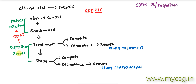Within disposition events there are two possibilities: one is study treatment disposition and the second is study participation disposition. We use a variable called DSSCAT for sub-categorization of the disposition value. DSSCAT is used to store, for disposition events, whether it is study treatment disposition or study participation disposition. So we have DSCAT, DSSCAT, and DSSTDTC.